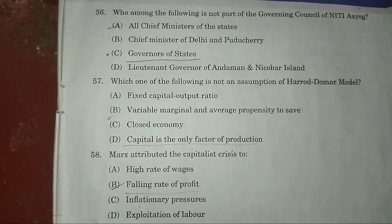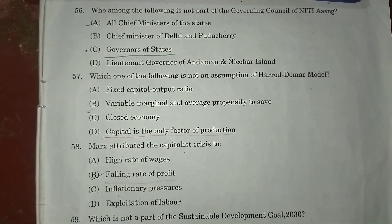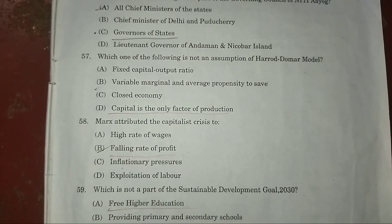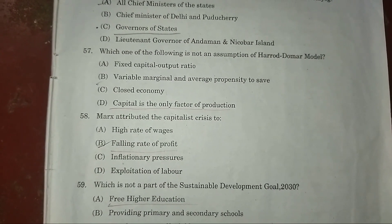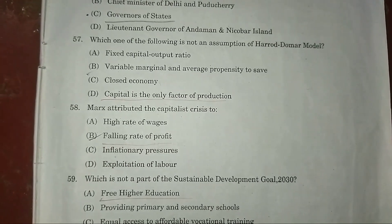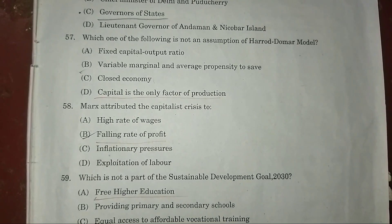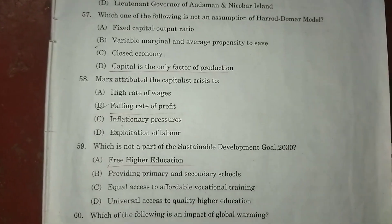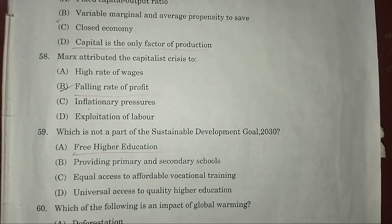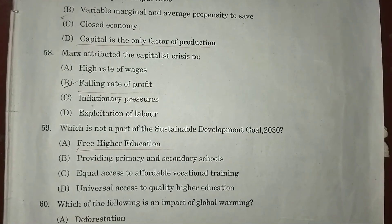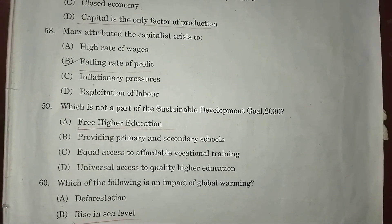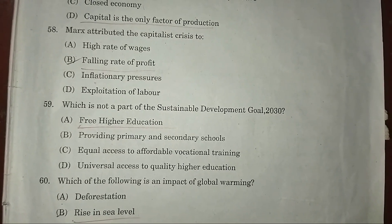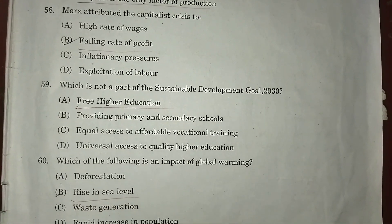Question 57: Which of the following is not an assumption of the Harrod-Domar model? Answer: D — capital is the only factor of production. Question 58: Marx attributed the capitalist crisis to — answer: B — holding the rate of interest.